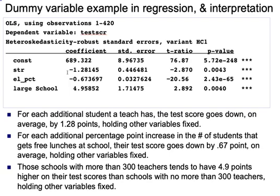For each additional student a teacher has, on average, the test score goes down by 1.28.